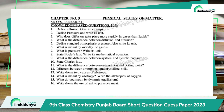Chapter 5 is Physical States of Matter. The important short questions are: Define effusion and give an example. Define pressure and write its units. Why does diffusion take place more rapidly in gaseous than liquid states? What is the difference between diffusion and effusion? Define standard atmospheric pressure and write its unit. What is meant by mobility of gases? State Boyle's law and write its mathematical equation. What is the difference between systolic and diastolic pressure? State Charles's law. What is the difference between evaporation and boiling point?